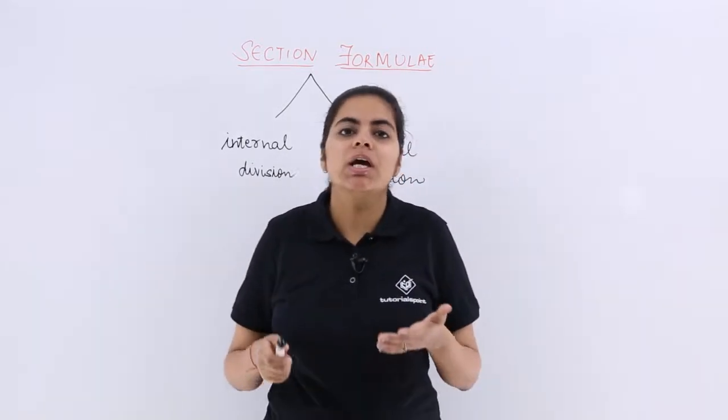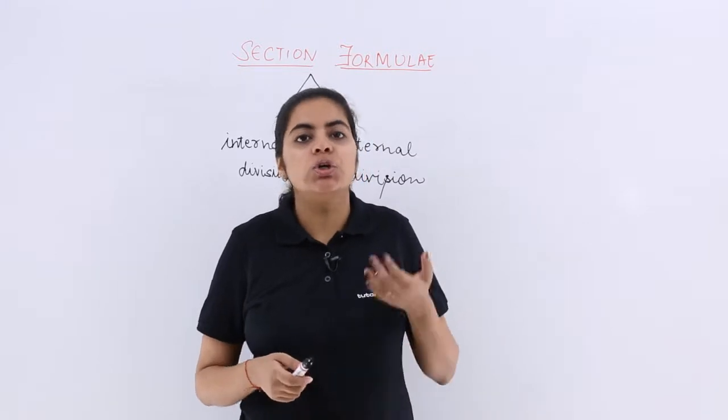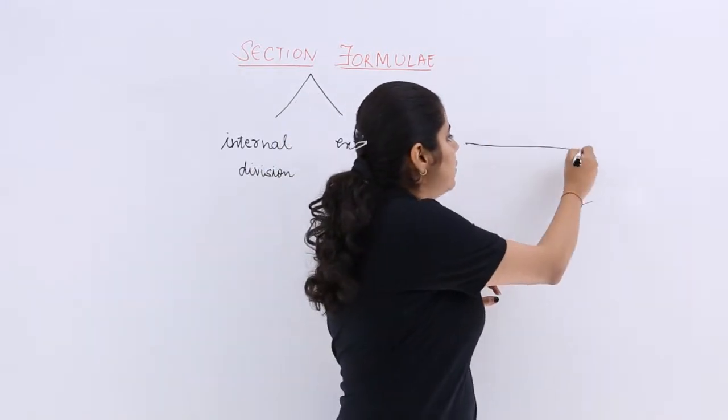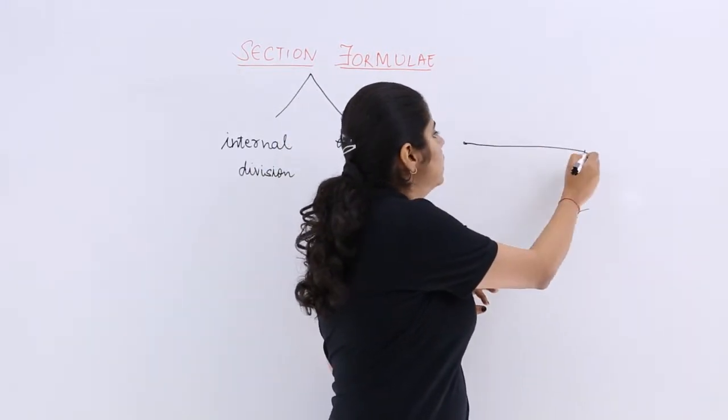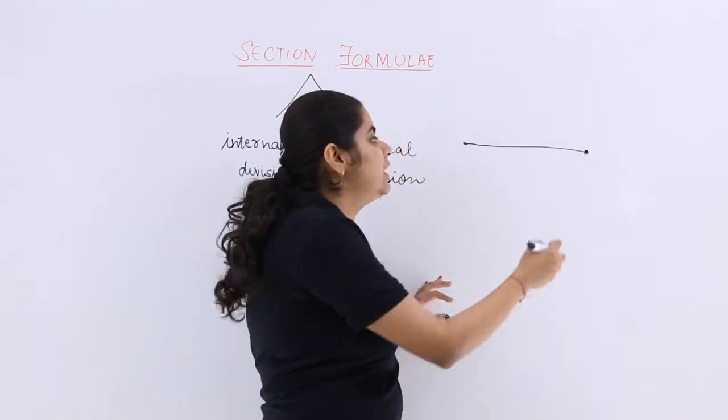Section formula is used when you are supposed to divide a line segment into a certain ratio by any given point.